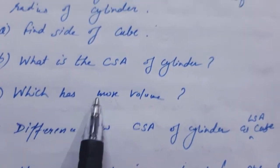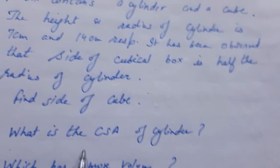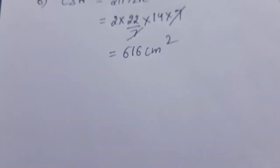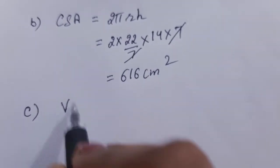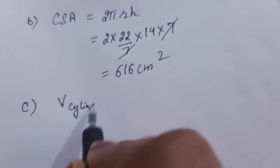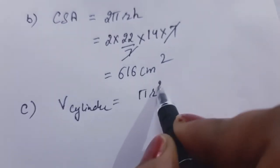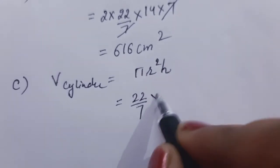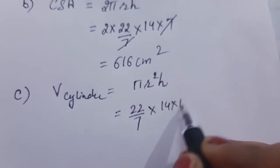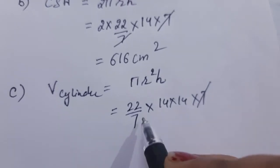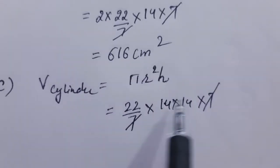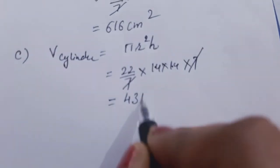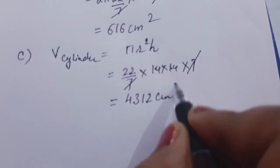Part C: Which has more volume, cylinder or cube? We will find both volumes. Volume of cylinder = πr²h = 22/7 × 14 × 14 × 7. The 7 cancels with 7. Multiplying 14 × 14 × 22, it comes out to be 4312 centimeter cube.